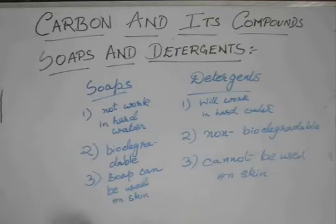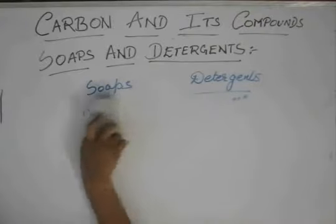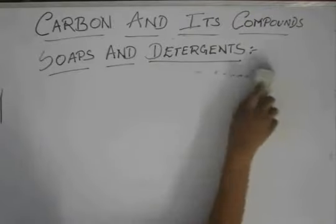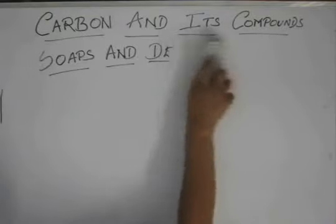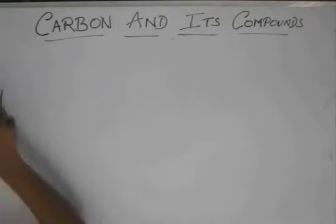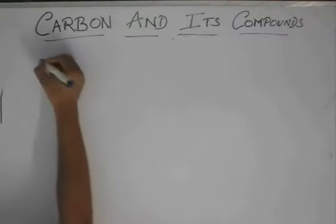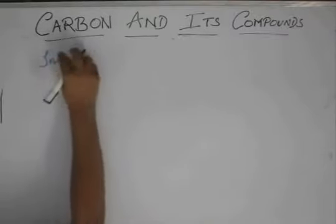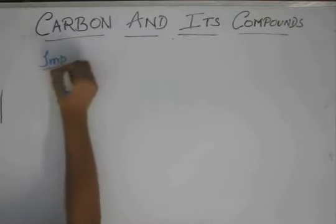So soaps are important in their place and detergents are important in their place. Now this ends soaps and detergents and subsequently it ends the chapter. Now there are some important points to remember in this chapter.